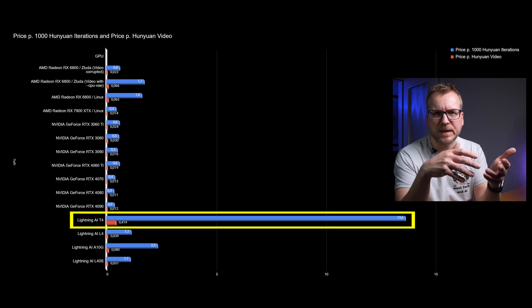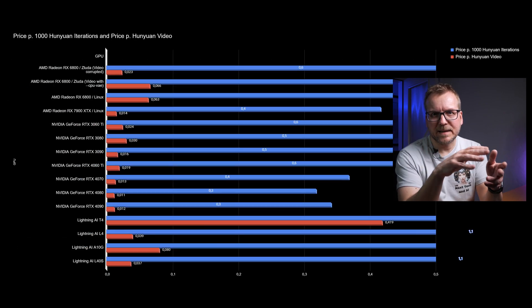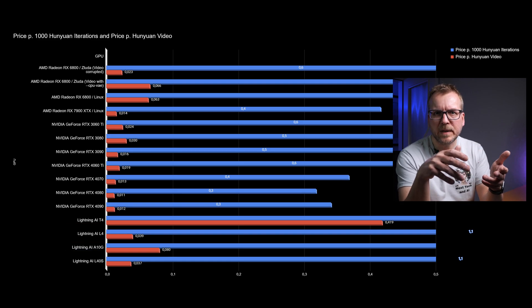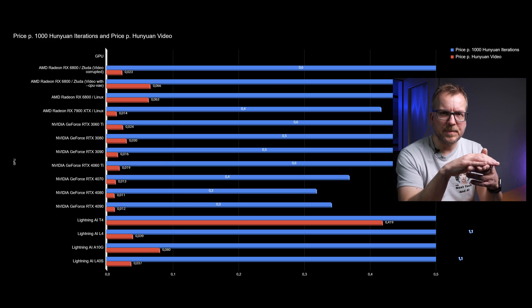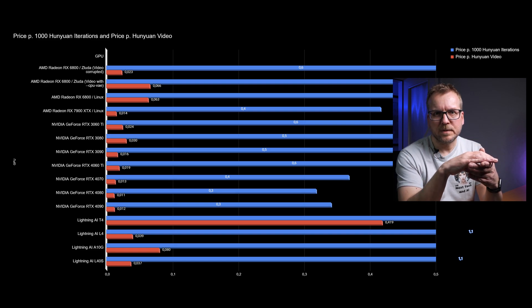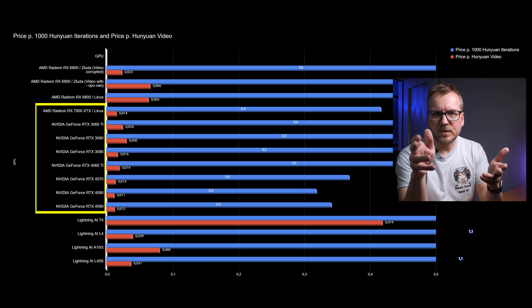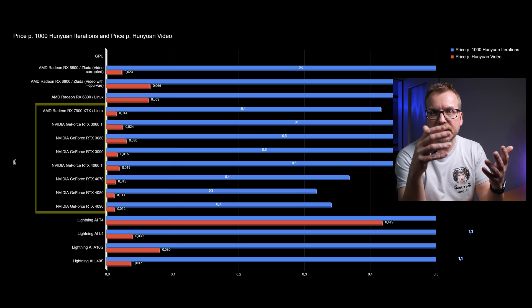So let's look at the more complex and VRAM-intensive generation of Hunyuan videos. The online T4 is clearly too weak for the price and skews our chart, so we'll zoom in a little. Here it is clear that the Cloud L4 and L40s have a better price-performance ratio than my local RX 6800. So for VRAM-intensive applications, it is better for me to use an online GPU. The other local GPUs, on the other hand, beat the online GPUs provided they can actually generate the videos.